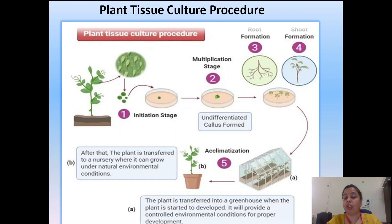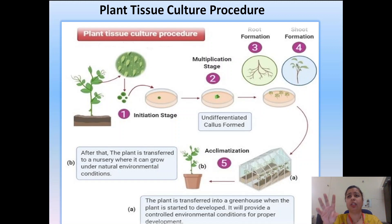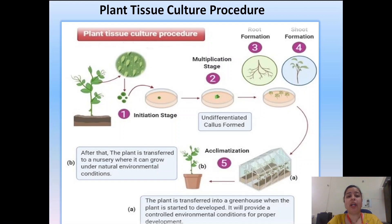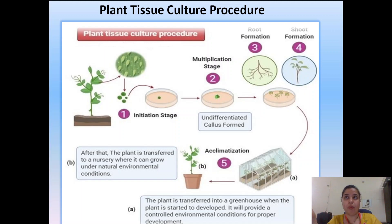Then the multiplication stage occurs — that is callus formation, an undifferentiated cell mass. There is no fixed structure; you cannot determine which part of the plant it is — it is just an undifferentiated cell mass. In the next step, definite parts can be seen, which may take up to 21 to 30 days. First root formation occurs and then shoot formation occurs.